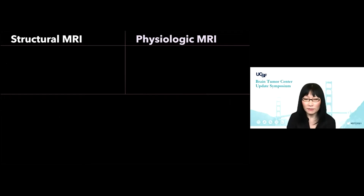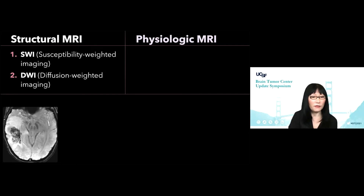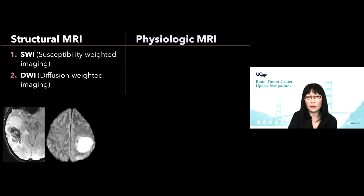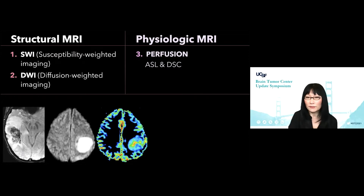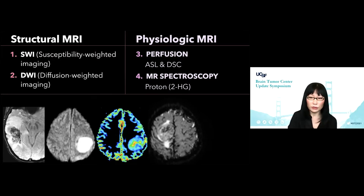But for this talk, I'm only really going to focus on four imaging methods that we do for almost all brain tumor patients at UCSF: susceptibility weighted imaging, diffusion weighted imaging, perfusion MRI — there are two different types, arterial spin labeling and dynamic susceptibility contrast weighted perfusion — and I'm going to finish up with MR spectroscopy, the proton MRS, that includes two hydroxyglutarate MR spectroscopy.